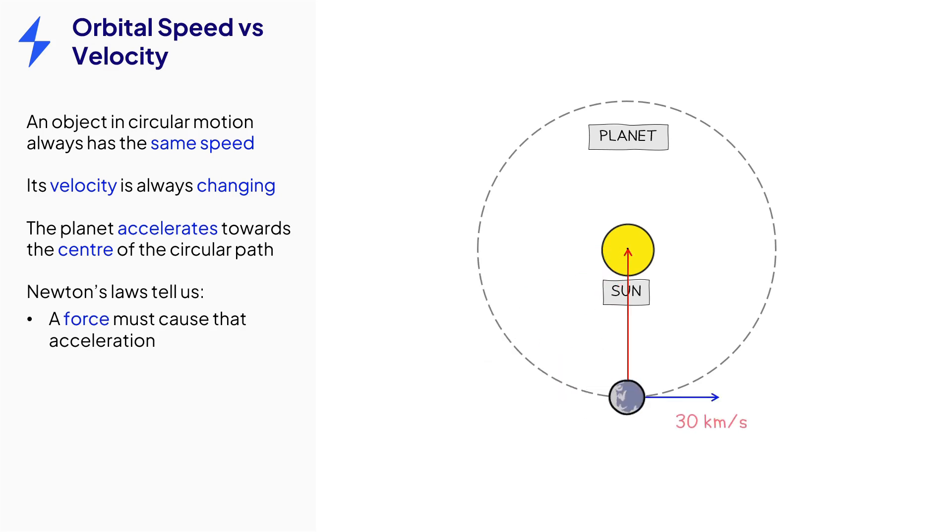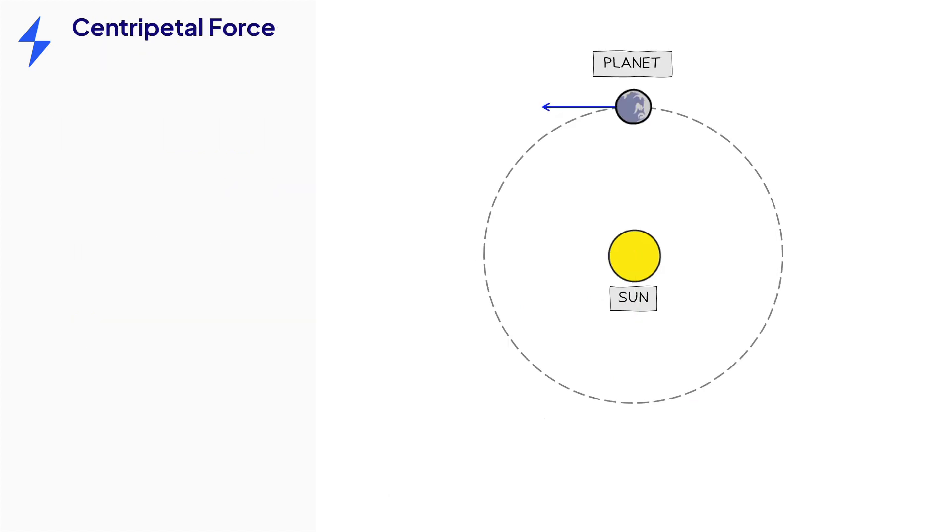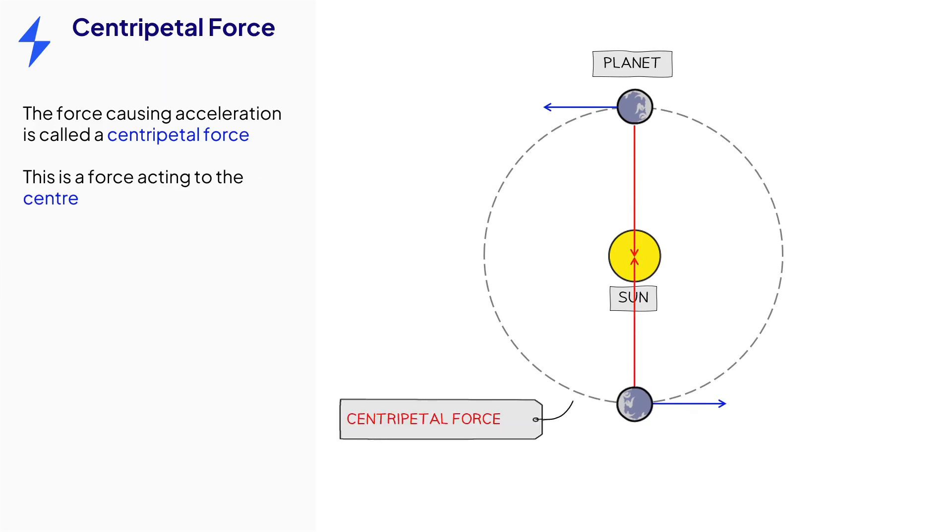According to Newton's laws, for the planet to accelerate inwards, a force must act inwards as well. That force is called the centripetal force. It acts towards the centre of the circle, like the acceleration. This makes it perpendicular to the object's velocity.